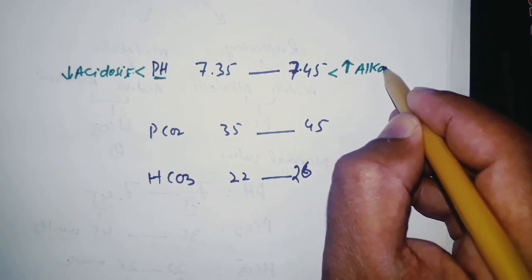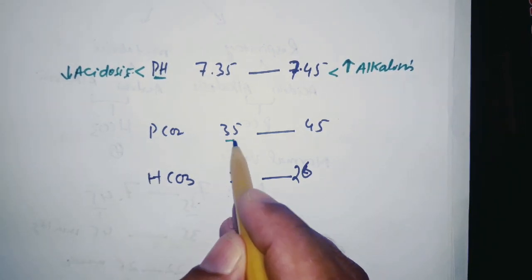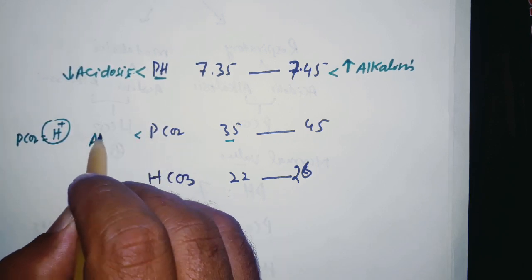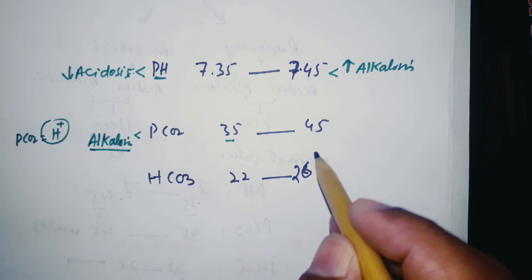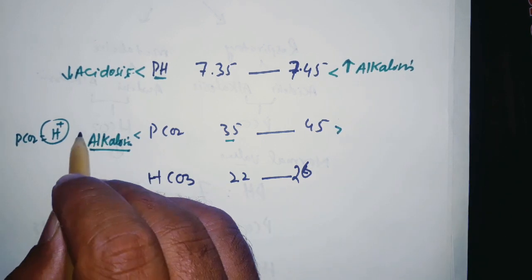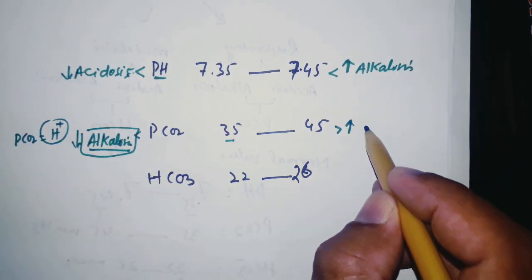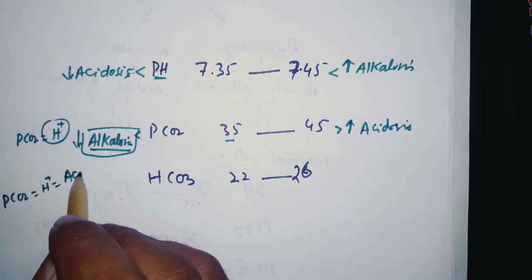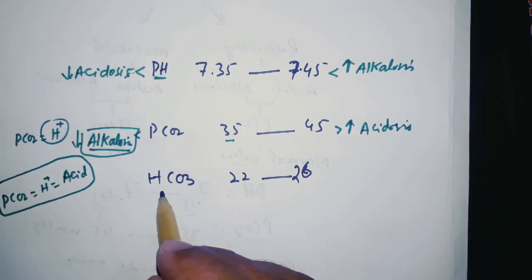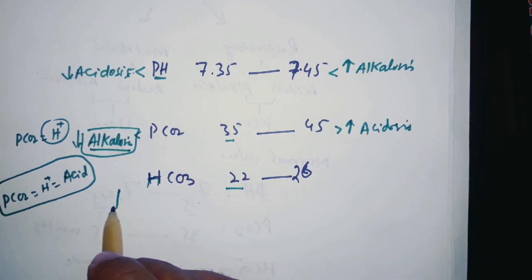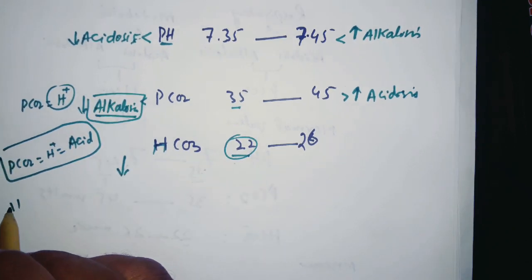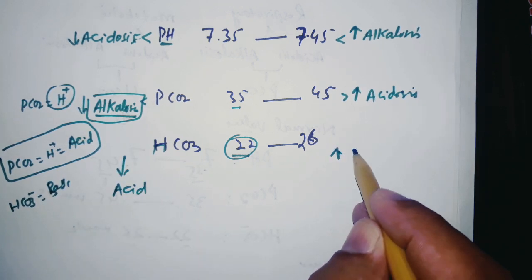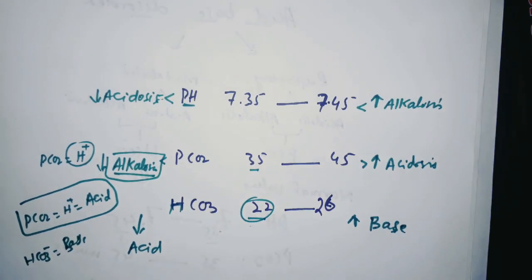Carbon dioxide forms more protons, so it is acidic. If PCO2 is less than 35 that indicates alkalosis, and if it is more than 45 that indicates acidosis. HCO3 is a base, so if HCO3 is less than 22 that is called acidosis, and if it is more than 26 that is called alkalosis.